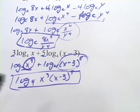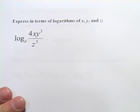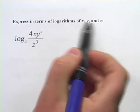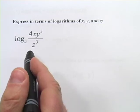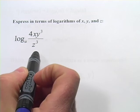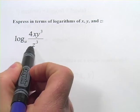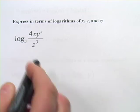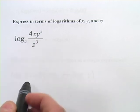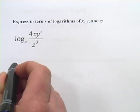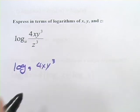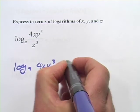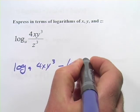Let's try one more where we go the opposite direction — express in terms of logarithms of x, y, and z. So we've got a single expression and we want to separate it out. We have a z to the third on the bottom dividing everything, so we can separate it into two parts: the top part would be log base a of 4x times y to the third, and the bottom part would be minus log base a of z to the third.